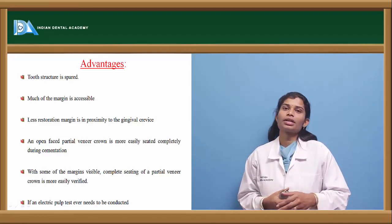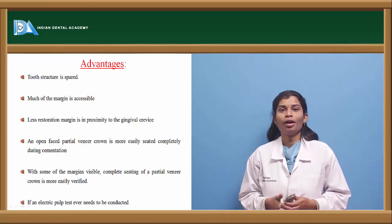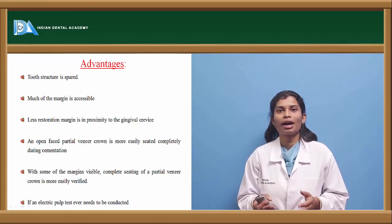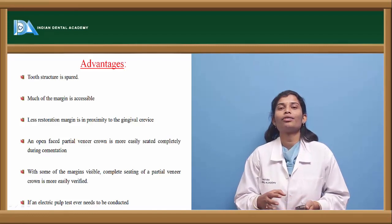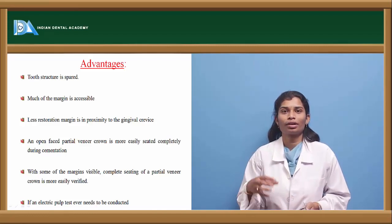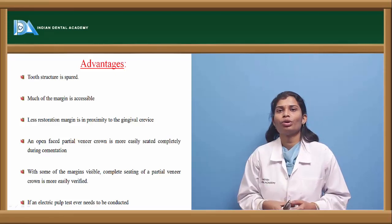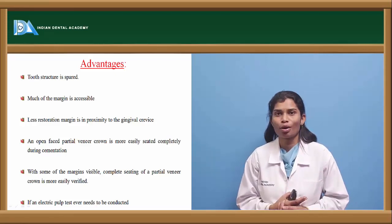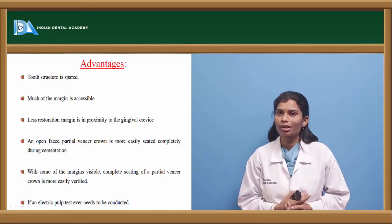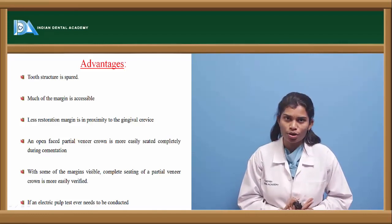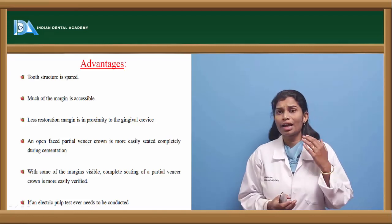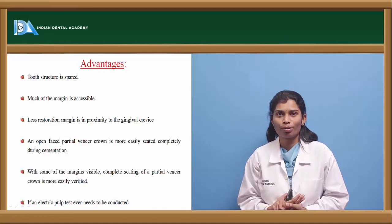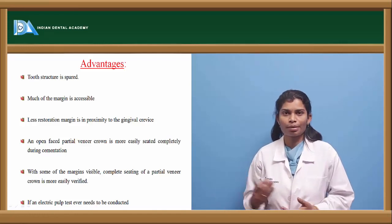With a full veneer restoration, suction develops during cementation, acting like a hydraulic cylinder and creating resistance to seating when loading with luting cement — making it difficult to confirm whether the restoration is properly seated. With partial veneer crowns, vitality testing always remains possible. Since one surface is left untouched, shade matching is not a problem.